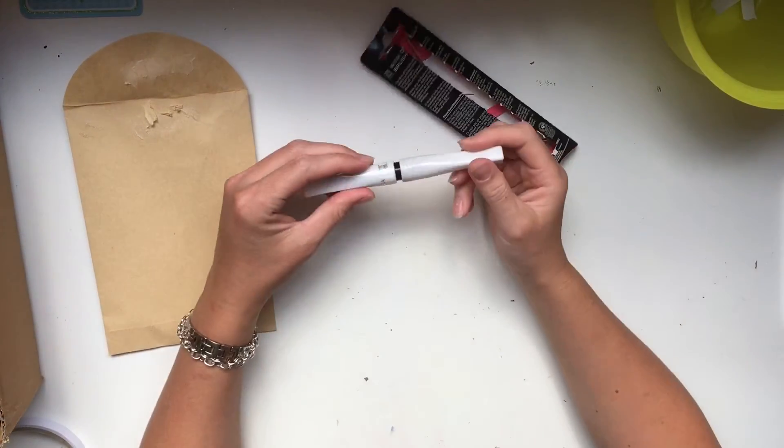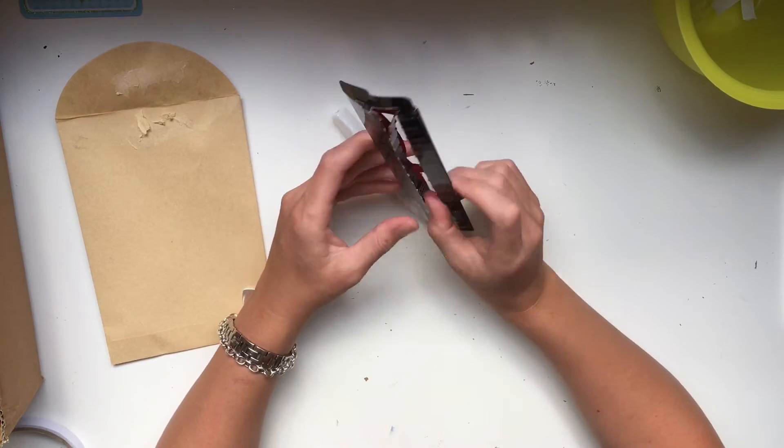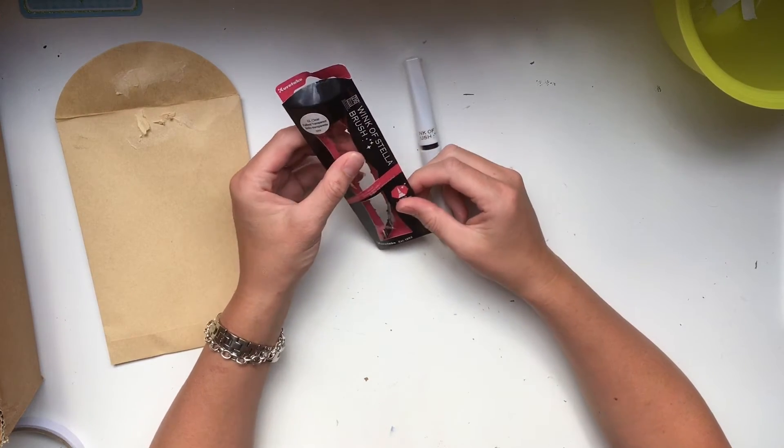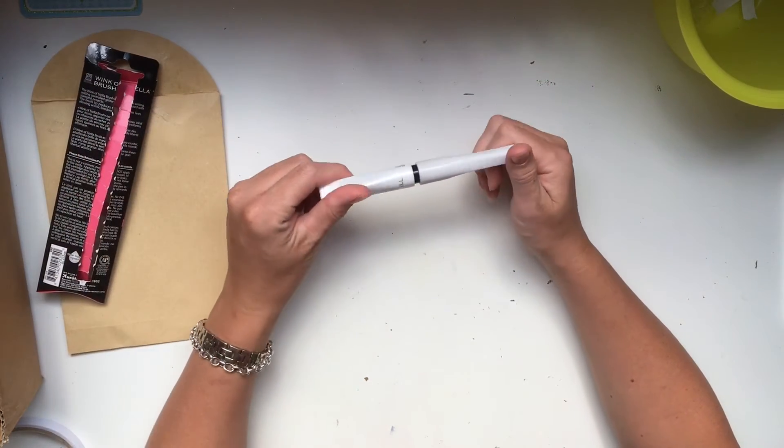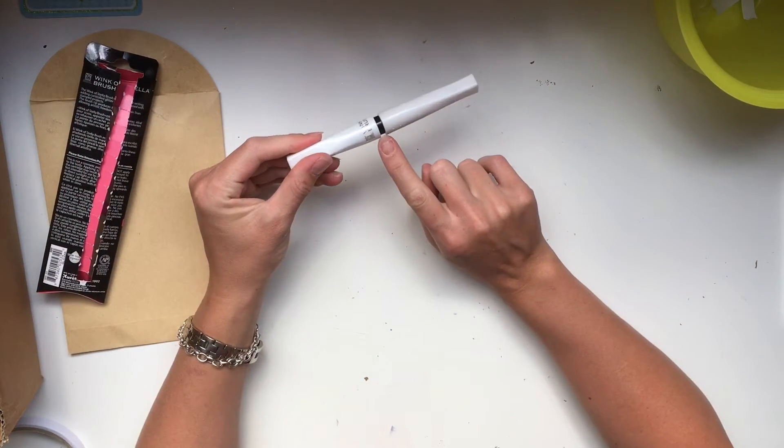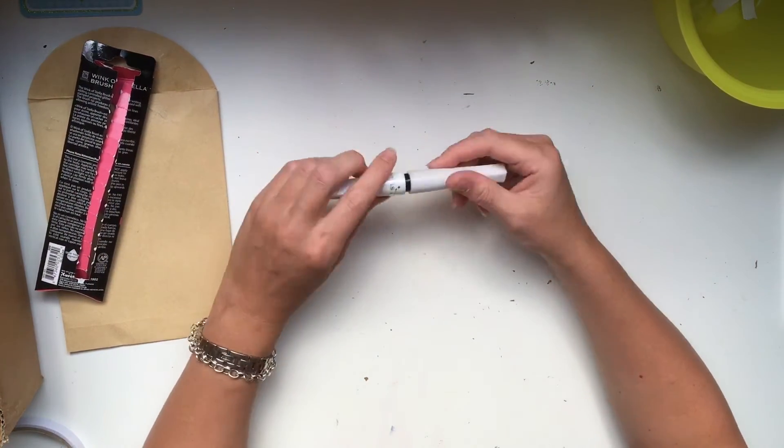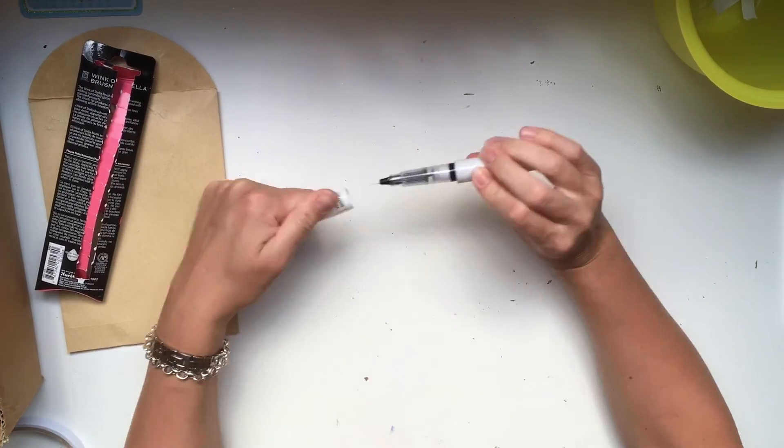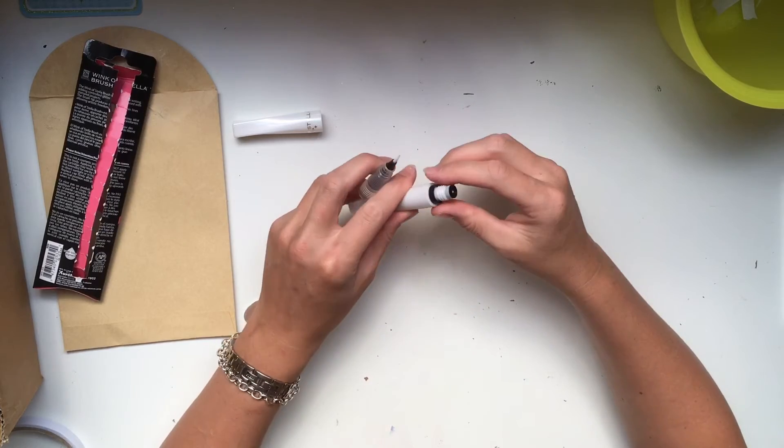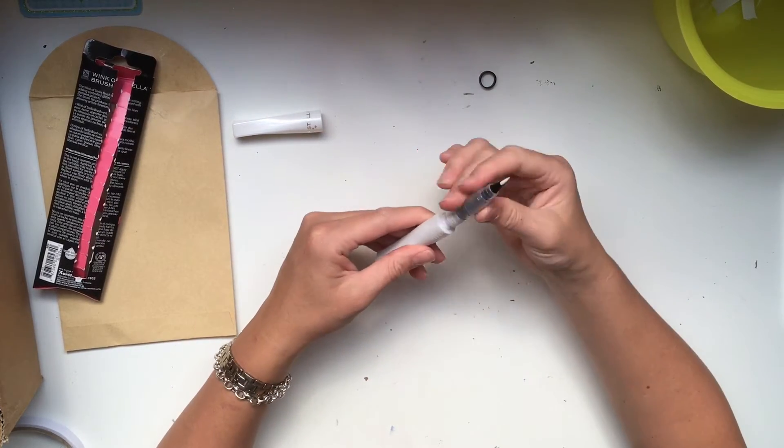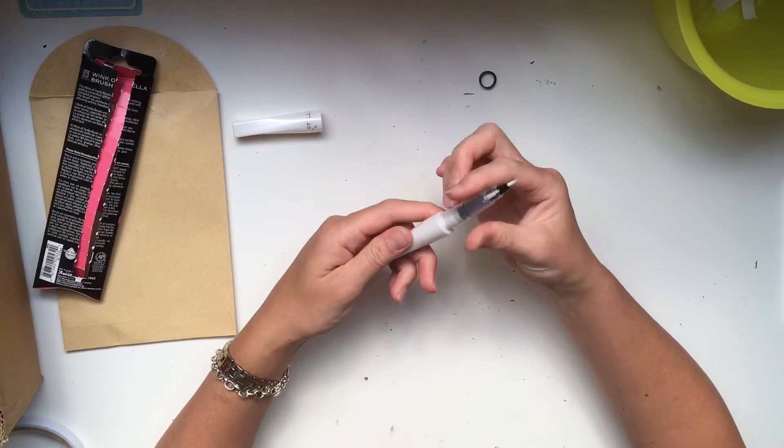So I must tell you, I just had to cut the video a bit then because my packet doesn't have any instructions on it. And I had to Google how you make the Wink of Stella pen work because it wouldn't go. You've got to take the top off, unscrew the nib, take out that black bit and throw it in the bin because it's nothing. And then put the nib back on.